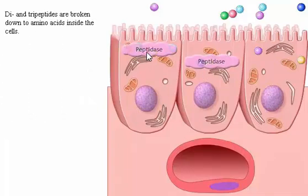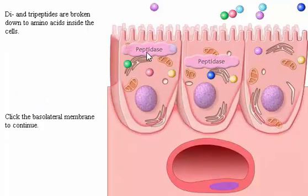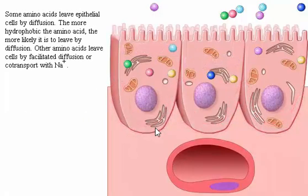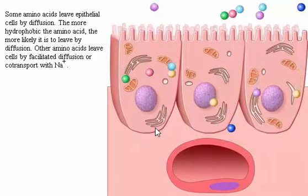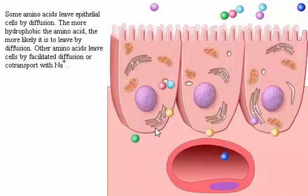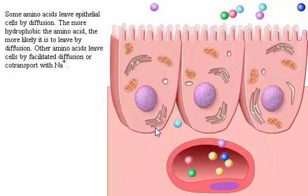Di- and tripeptides are broken down to amino acids inside the cells. Some amino acids leave epithelial cells by diffusion — the more hydrophobic the amino acid, the more likely it is to leave by diffusion. Other amino acids leave cells by facilitated diffusion or co-transport with sodium.